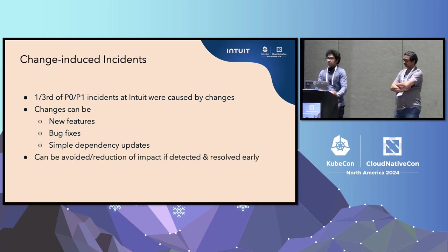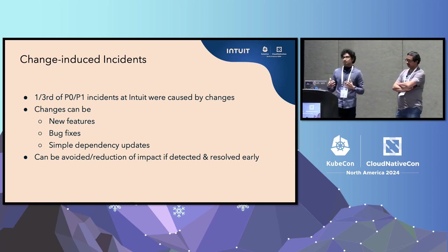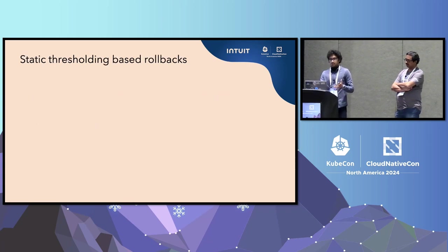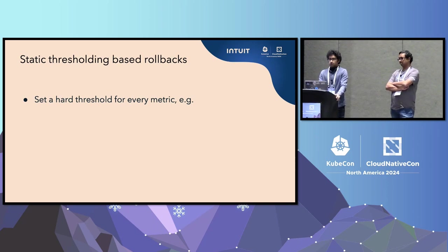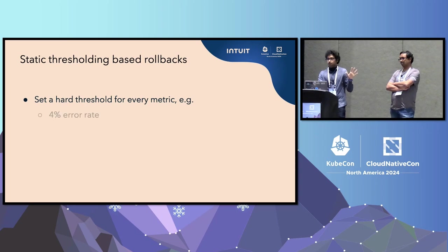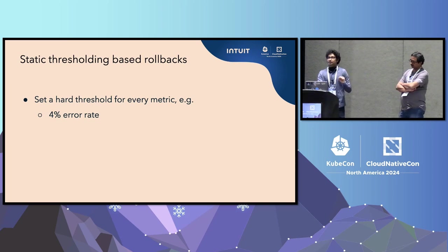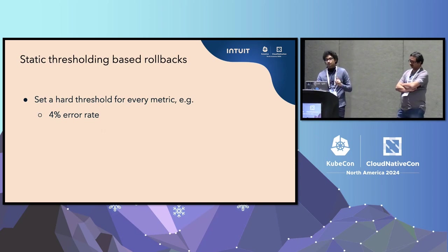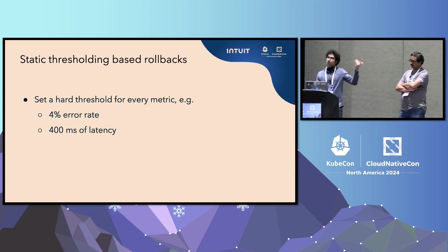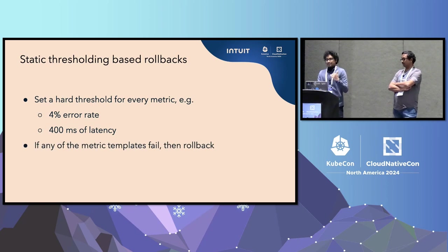The impact can really be reduced if issues are detected early and resolved early. The most basic way to prevent them is a static thresholding-based rollback. We basically set a hard threshold for every metric we care about for our application. For example, if you care about error rate, you set a hard threshold of 4% — any point above that threshold, you automatically roll back. You do that for every single metric, like request latency at 400 milliseconds.